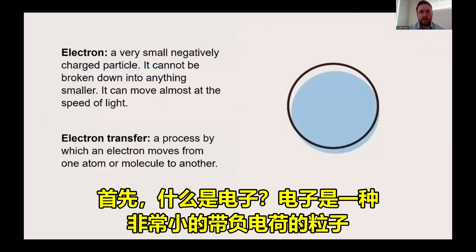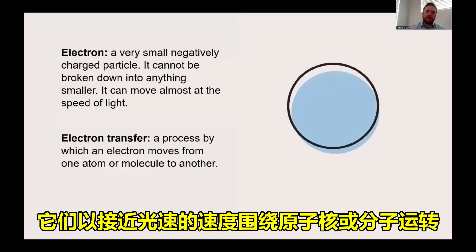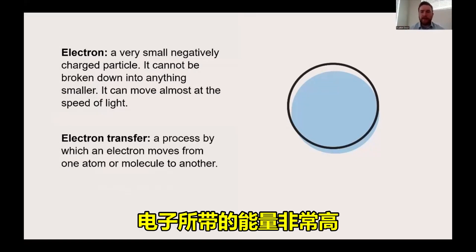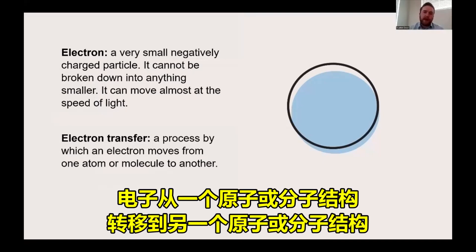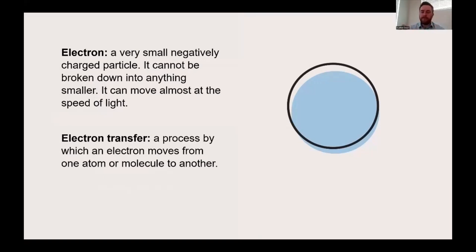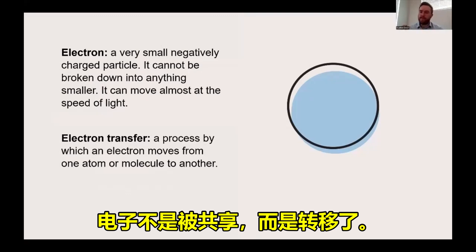But first, what is an electron? An electron is an extremely small, negatively charged particle. These are orbiting around the nucleus of an atom or around a molecule near the speed of light. There's a ton of energy associated with these electrons. And redox chemistry specifically has to do with the concept of electron transfer. An electron is transferred from one atomic or molecular species to another. It isn't shared, it is transferred.